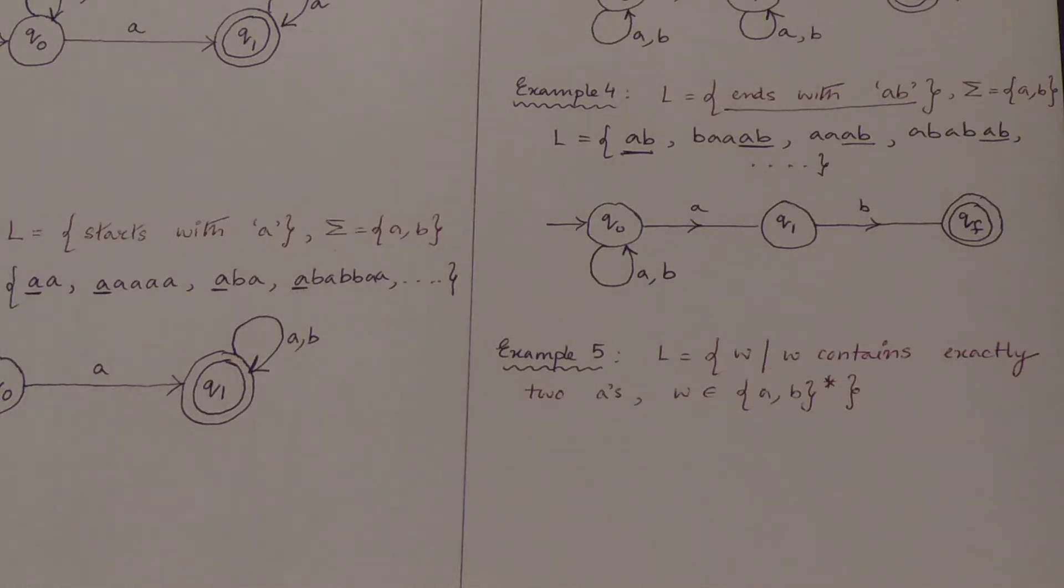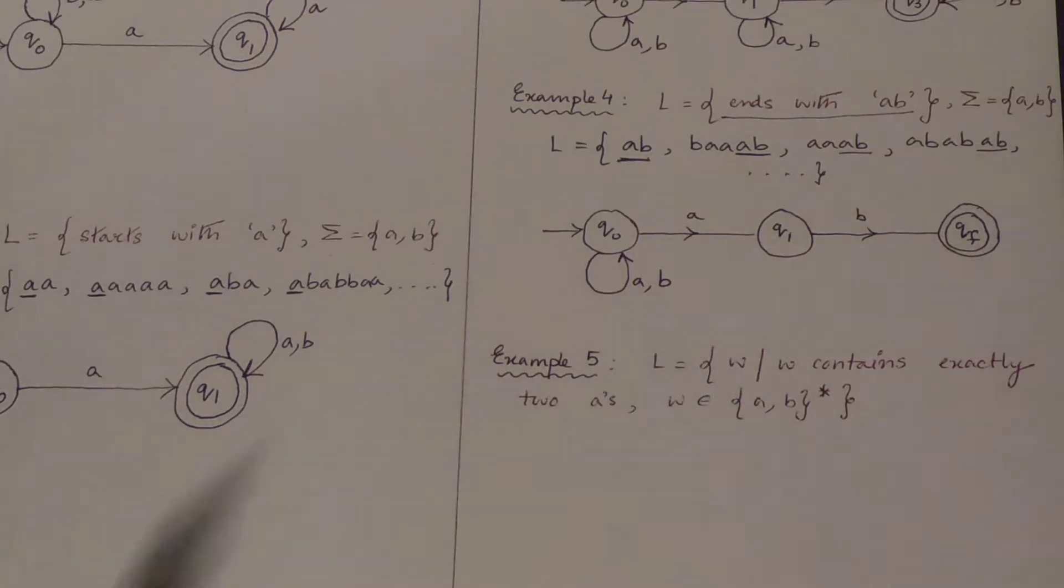Hello everyone, welcome to this video lecture series of theory of automata. We are learning non-deterministic finite automata construction of NFA from different types of regular languages. In my previous lecture, we understood four different examples where we learned about starting with one symbol like A, ending with another symbol, ending with a symbol like A, then containing substring AB, then ends with AB. These are the previous examples that we did.